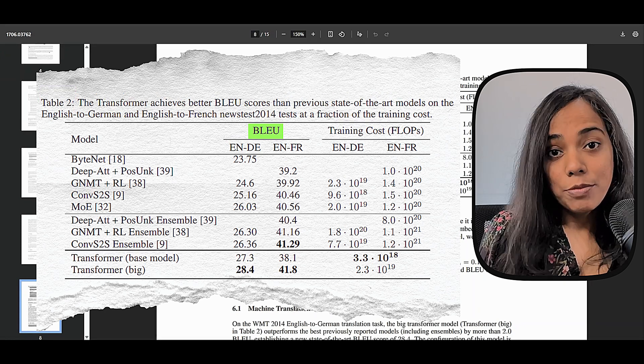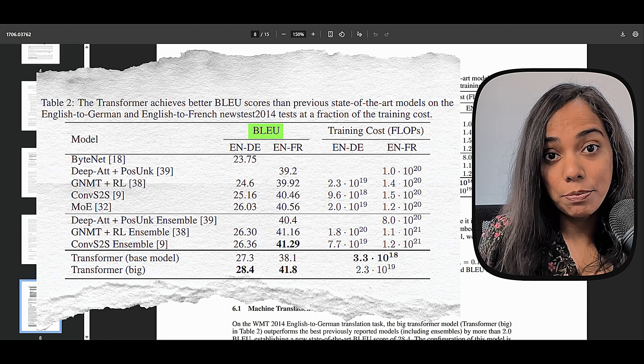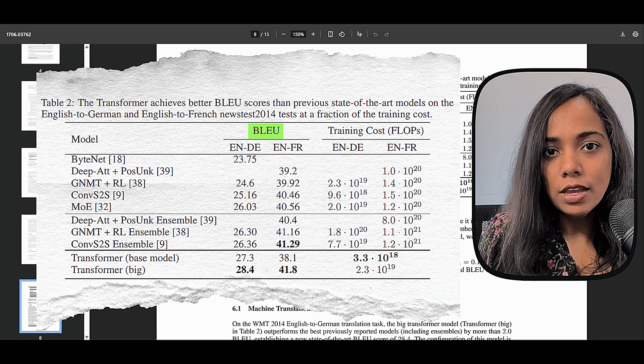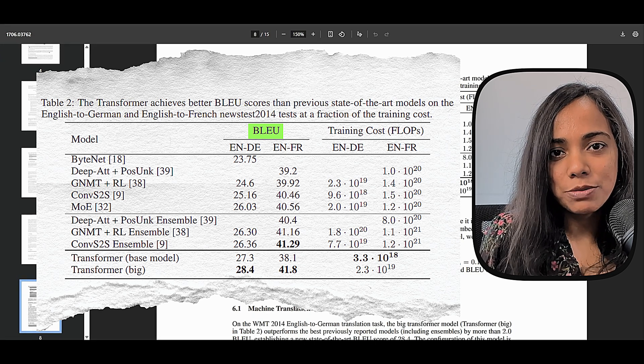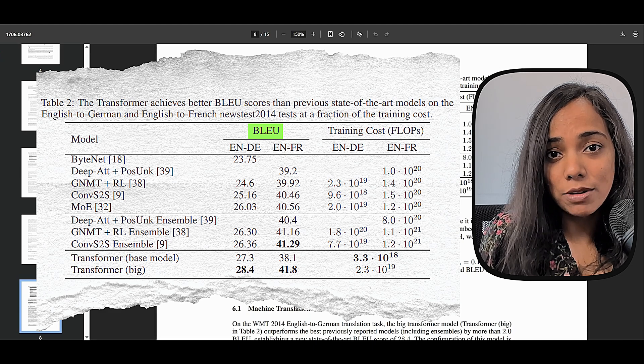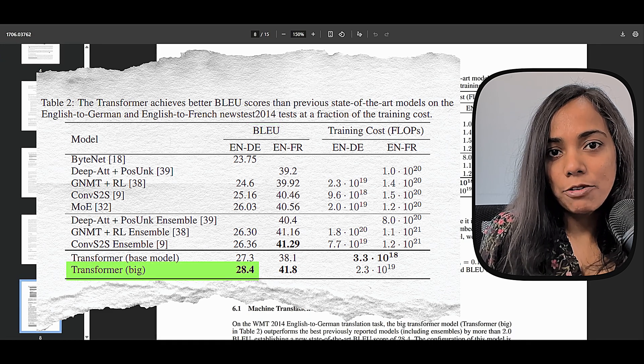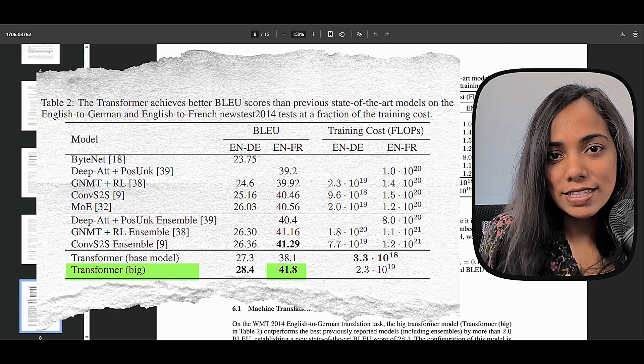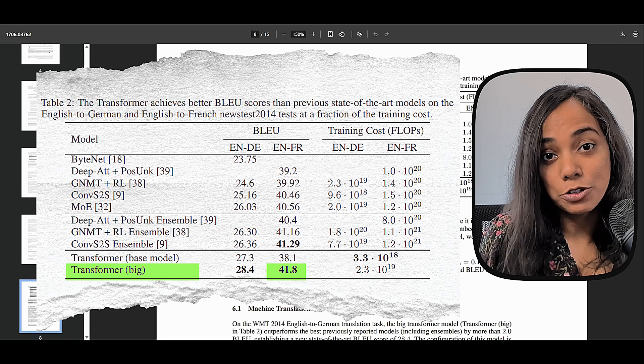The results shown in the paper are stunningly good. BLUE measures how machine translations match human translations. A higher BLUE score means better translation quality. You can see that the big model outperformed the previous reported models, including ensembles by more than two BLUE on English to German and performed comparatively for English to French.